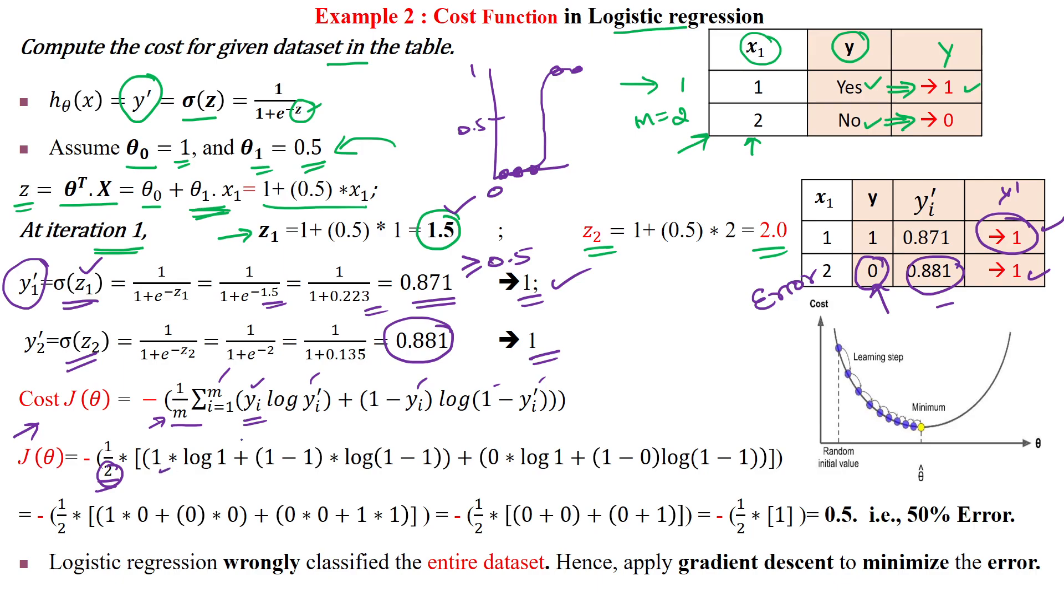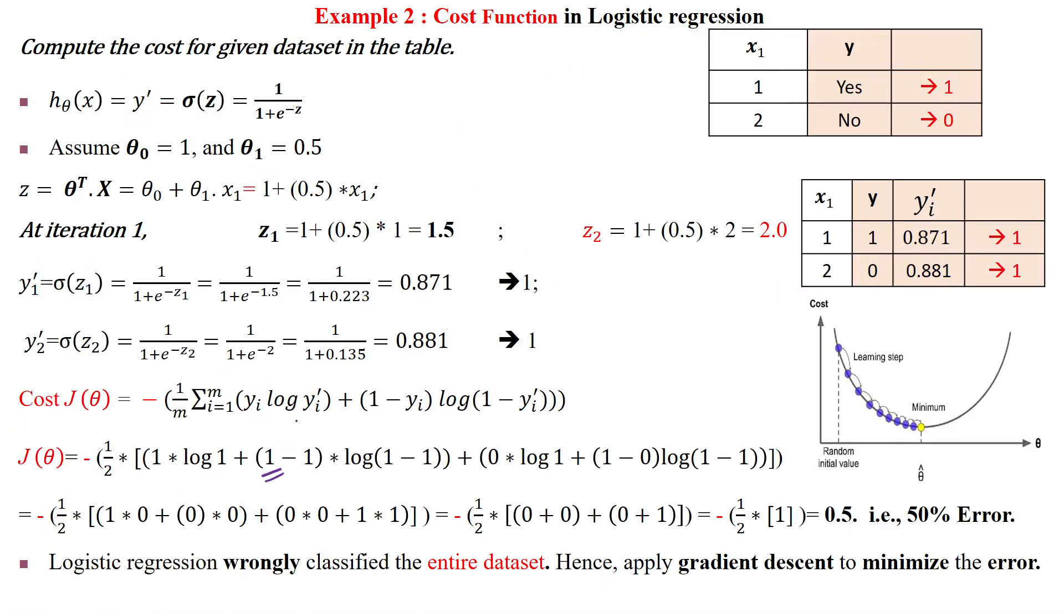y₁ is the actual output and ŷ₁ is the predicted output. The terms are y₁ log(ŷ₁) + (1-y₁)log(1-ŷ₁), where y₁=1 and ŷ₁=0.871.